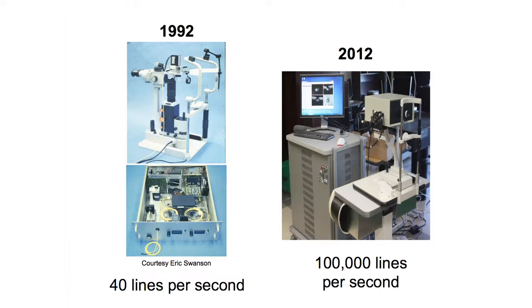OCT has come a long way since the original invention. The prototypes used in the earliest clinical studies in 1993 needed three seconds to get a low definition image. The latest OCT systems being tested in our laboratory today can acquire a high definition cross-section at 100 frames per second. The speed has increased several hundred fold.